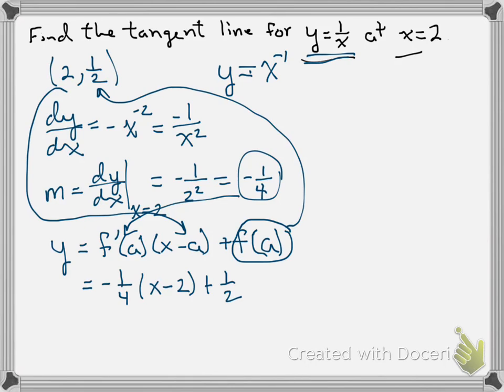Now depending on what form we want this in, this is something we could graph, and the form is fine, but if we wanted it in, say, y-intercept form, we would want to distribute the negative 1 fourth, so we get a minus 1 fourth x, here, negative 1 fourth times a negative 2 gives us a positive 1 half.